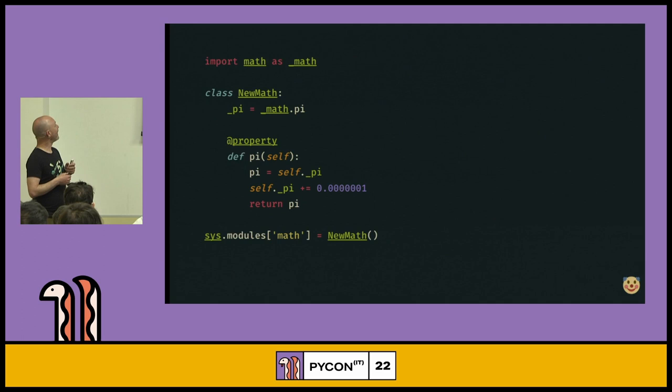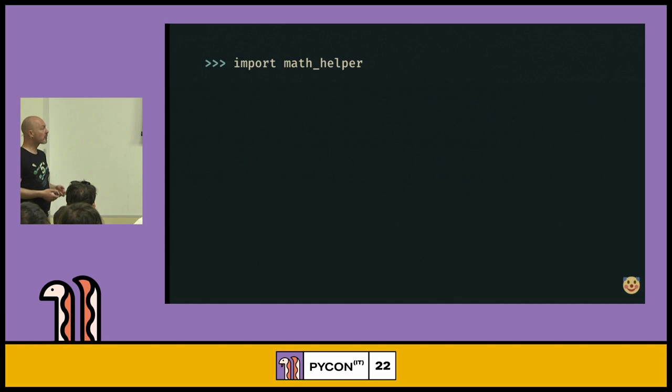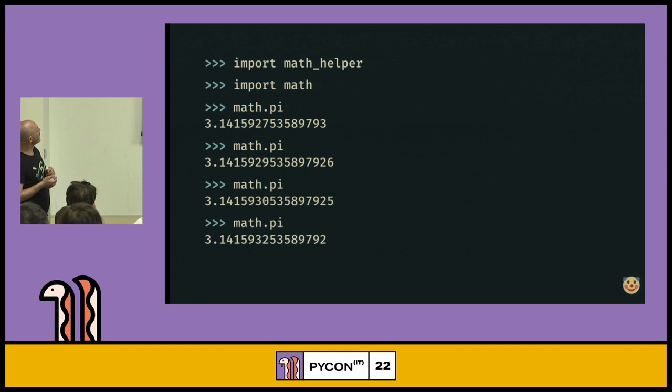So here is the new Math class that I've implemented that you've seen before. And then you don't even have to write this somewhere in your code base. This can be within the new Math module itself. It just swaps out Math. It just inserts Math at the end of loading this library. So now when we use this library, import math_helper, which is the code that you've just seen, and then I import Math. It does nothing. And now whenever I access math.pi, I get these slightly different values. So this is pretty good.